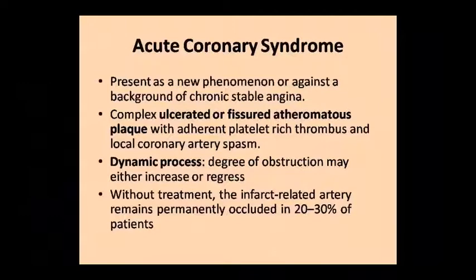Acute coronary syndrome arises as a new phenomenon, often superimposed on chronic stable angina. It becomes a complex ulcerated or fissured atheromatous plaque. Platelets adhere, a thrombus is formed, and coronary artery spasm can cause blockage. In this dynamic process obstruction can increase, and without treatment the infarct-related artery becomes permanently occluded, which can be seen in 20-30% of patients.